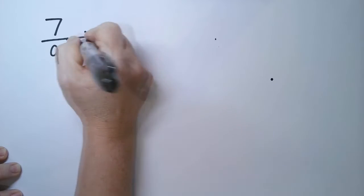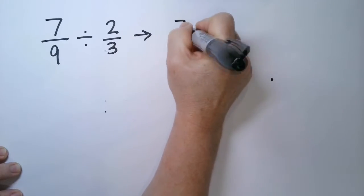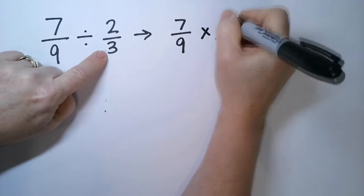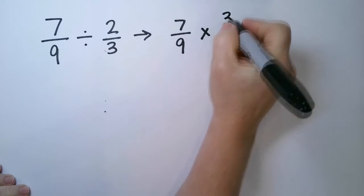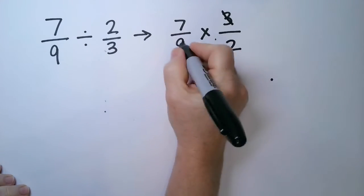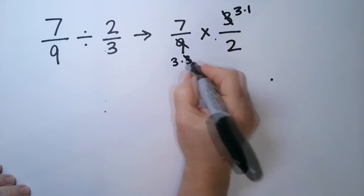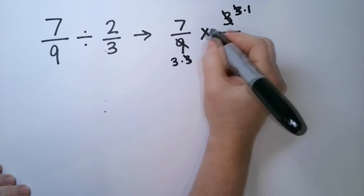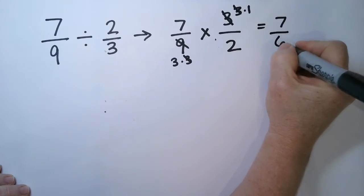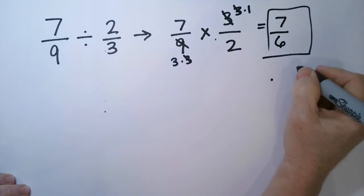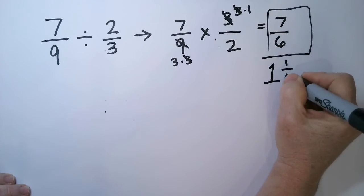How about 7 ninths divided by 2 thirds? So that's 7 over 9 multiplied by 3 over 2. Before I multiply, I'm actually going to cancel. This 9 is 3 times 3, and this 3 is 3 times 1 — so I can cross off one of the 3s. I'm left with 7 times 1, which is 7, and 3 times 2, which is 6. So the answer is 7 sixths, or you could write it as 1 and 1 sixth.